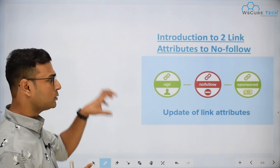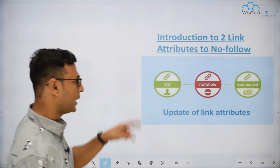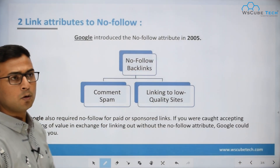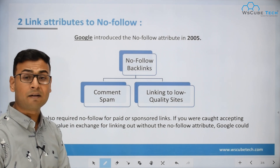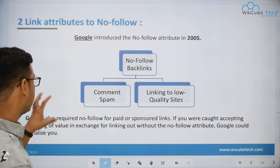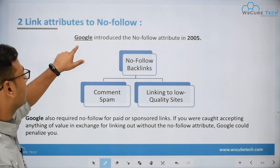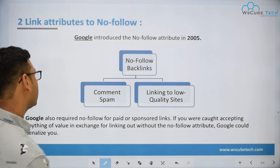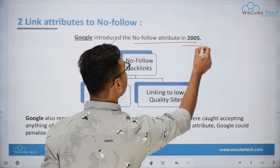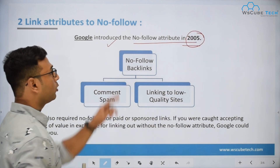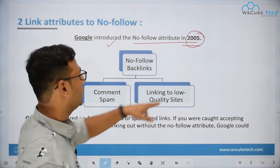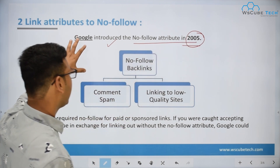In this video, we are going to talk about these two link attributes which were recently introduced and how they can benefit SEO or the webmaster. From an information point of view, Google introduced the nofollow attribute in 2005 — the nofollow attribute which we see today was introduced in the year 2005 by Google.